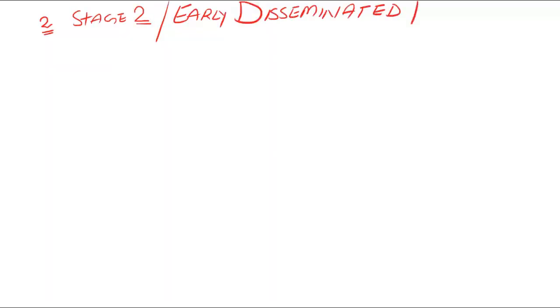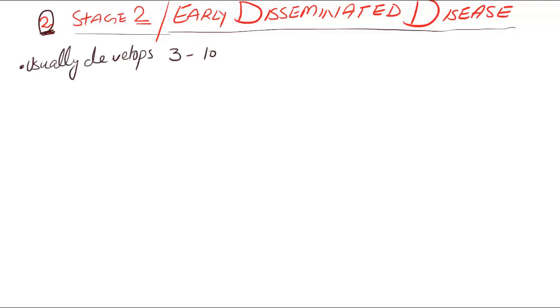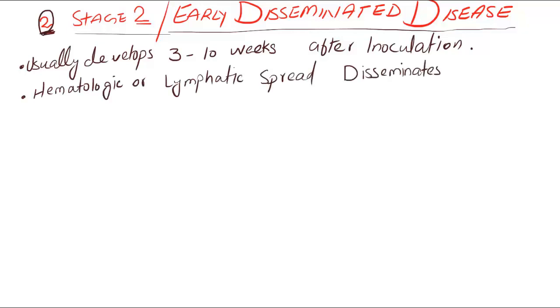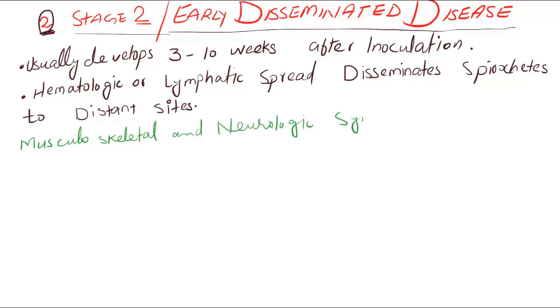Second stage, or early disseminated disease, usually develops three to ten weeks after inoculation. Hematologic or lymphatic spread disseminates spirochetes to distant sites. Musculoskeletal and neurologic symptoms are the most common symptoms in the second stage.